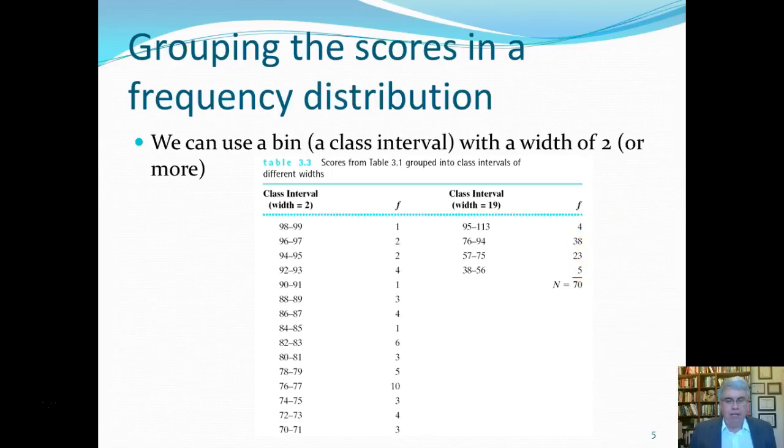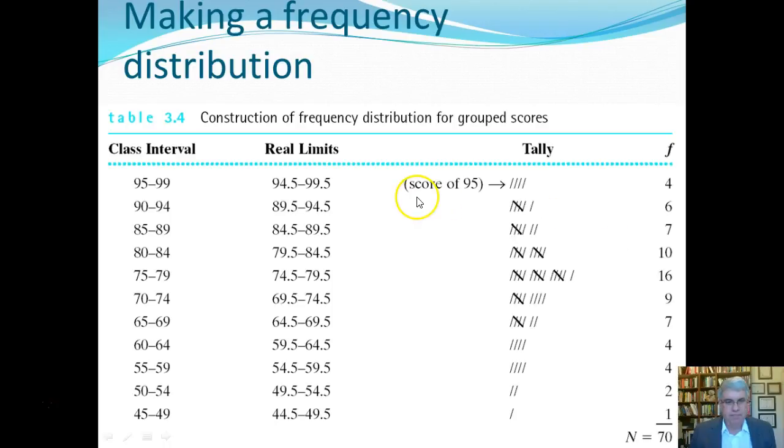The goal, what we want to do, is we want to find the right number of bins that will communicate most clearly to us. Now, one way of doing this is finding bins that have logical divisions. And so we might want to try something like, let's have the upper 90s, lower 90s, upper 80s, lower 80s, upper 70s, lower 70s, upper 60s, and so on.